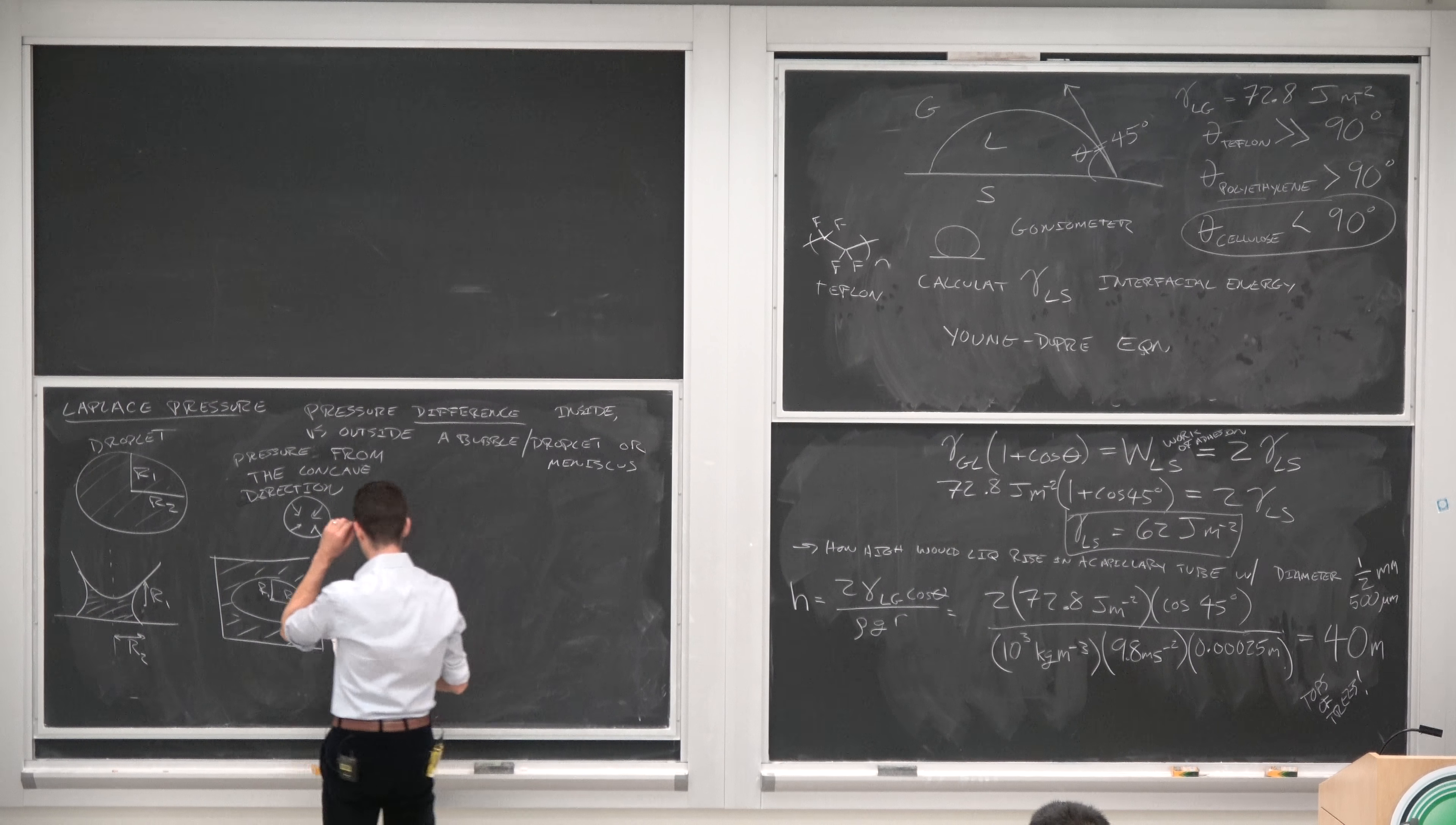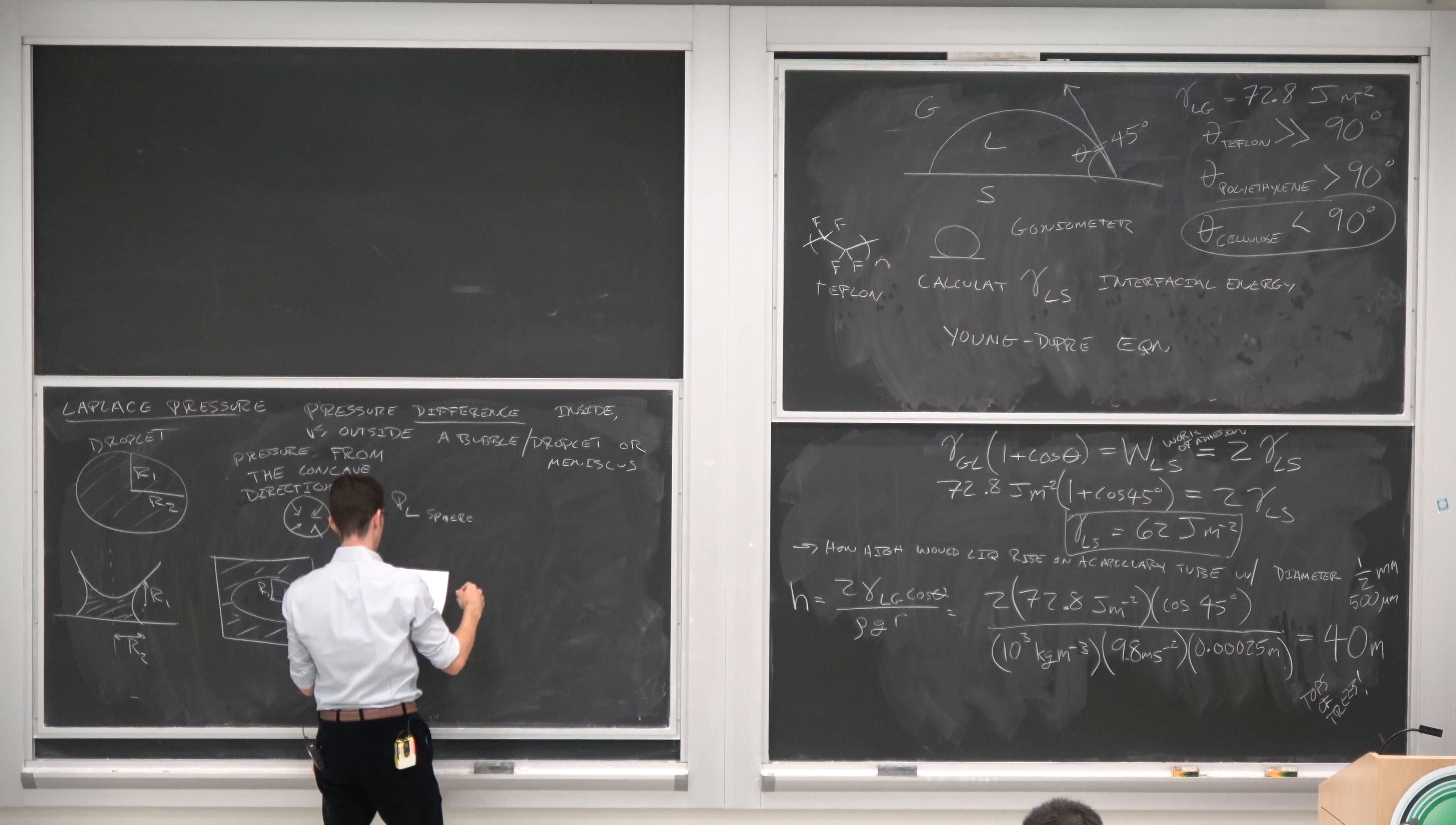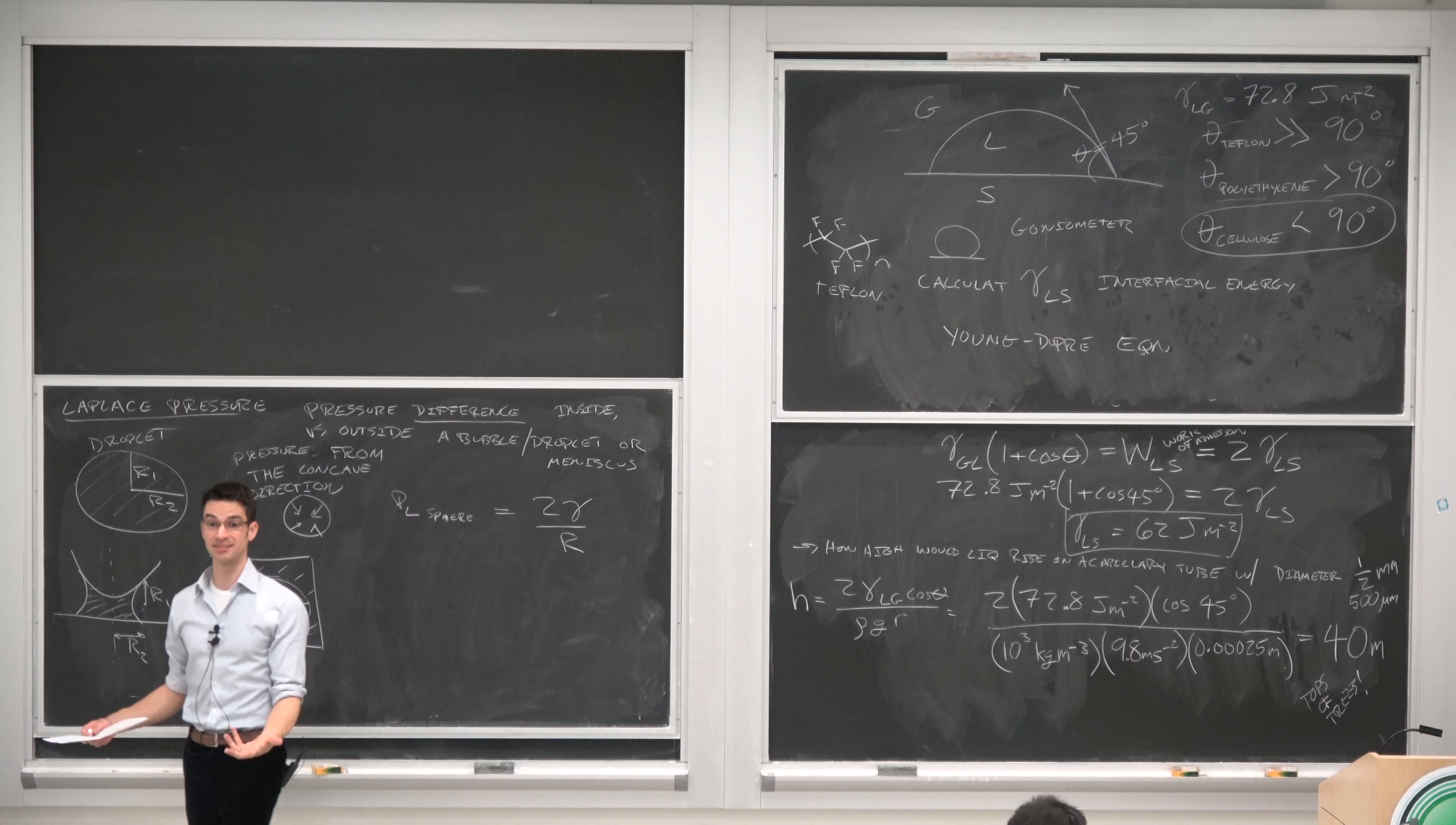Now I'll show you what the Laplace pressure is. They follow really simple equations and then I'll show you where it comes from. The Laplace pressure for a sphere: 2 gamma over R. That's easy. Just the interfacial energy between the two media and the radius of the sphere.